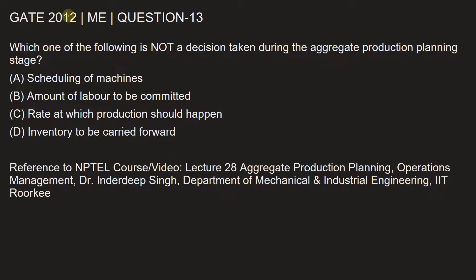This question is from GATE 2012 Mechanical Engineering paper, question number 13: Which one of the following is not a decision taken during aggregate production planning stage? Option A: scheduling of machines. Option B: amount of labor to be committed. Option C: rate at which production should happen. Option D: inventory to be carried forward.